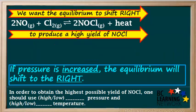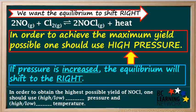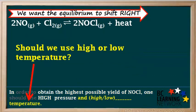Remember, we wanted the equilibrium to shift to the right in order to increase the yield of NOCl. And because this equilibrium shifts to the right when pressure is increased, we can state that in order to achieve the maximum yield of the product for this reaction, one should use high pressure.